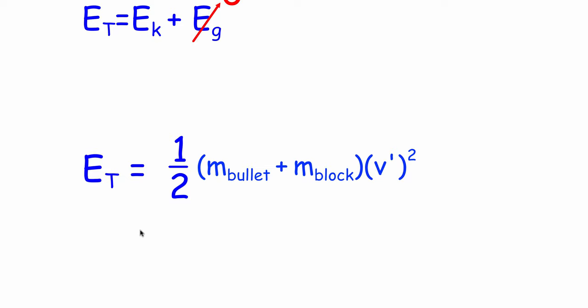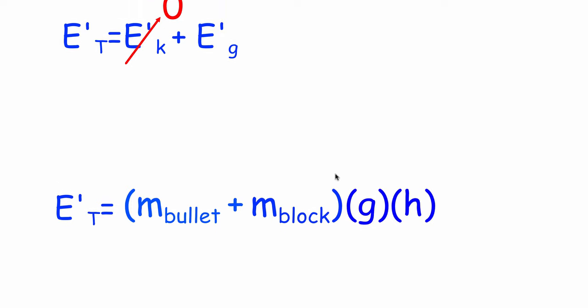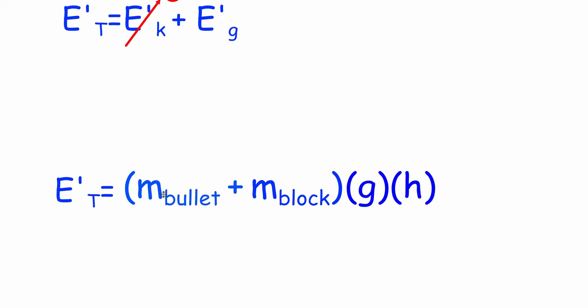Kinetic energy is one half mv squared. The bullet and the block are combining as one mass, and the speed when they start to move is v prime — this is our kinetic energy at position one. When the ballistic pendulum gets to the top of the swing, total energy e' could be a combination of kinetic and gravitational potential energy. When it reaches the top of its swing there is no more kinetic energy, so that's zero, which means all of the energy will be gravitational potential energy.